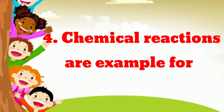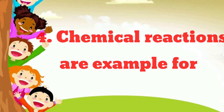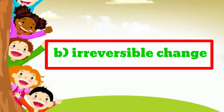Question number 4: chemical reactions are an example for — the given options are option A, reversible change; option B, irreversible change; option C, both of them. Chemical reactions are irreversible because they cannot be reversed. So it is known as irreversible changes, and the correct answer is option B, irreversible change.